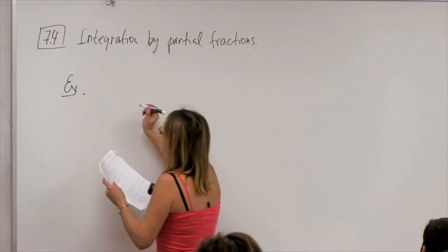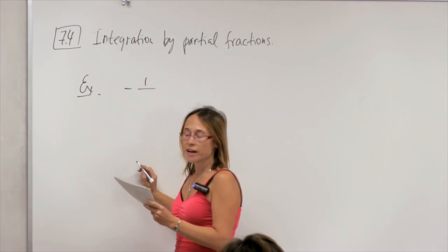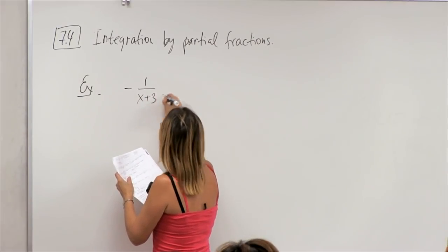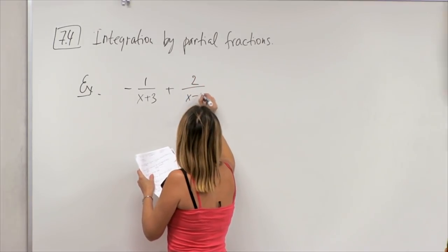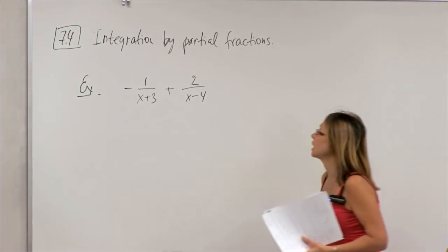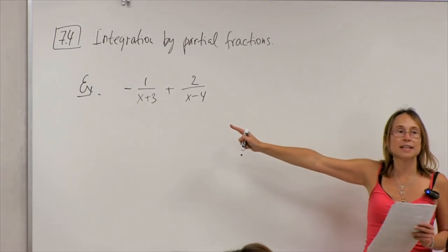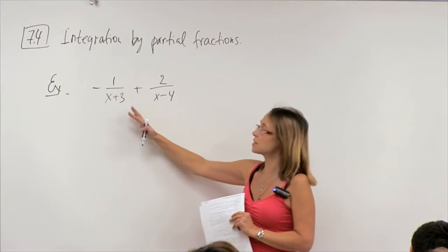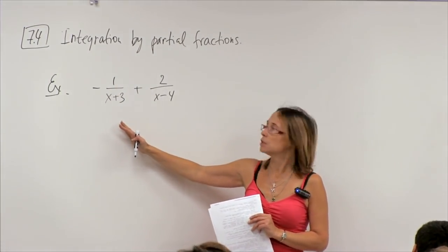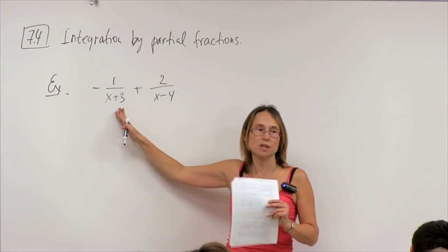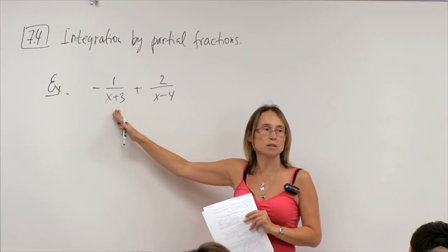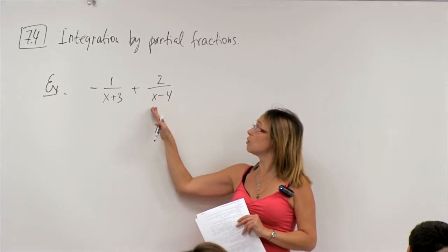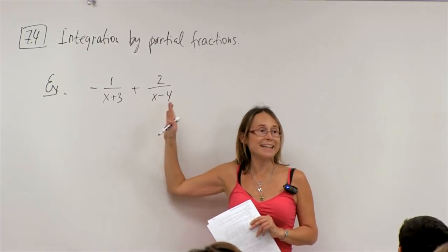Suppose on the left we have negative 1 minus 1 over x plus 3 plus 2 over x minus 4. Is this a function that is easy to integrate? You can see it's a sum of two terms. The integral of the first term is log of x plus 3, and the integral of the second is log of x minus 4, so it's very easy to integrate.